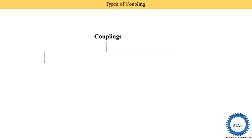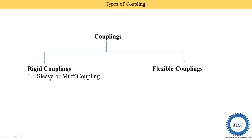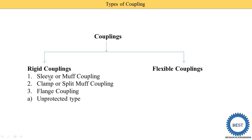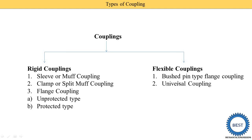To revise: couplings have two basic types — rigid coupling and flexible coupling. In rigid coupling: sleeve or muff coupling, split muff coupling, and flange coupling (which has unprotected and protected types). In flexible coupling: bush pin type flange coupling, universal coupling, and Oldham coupling.